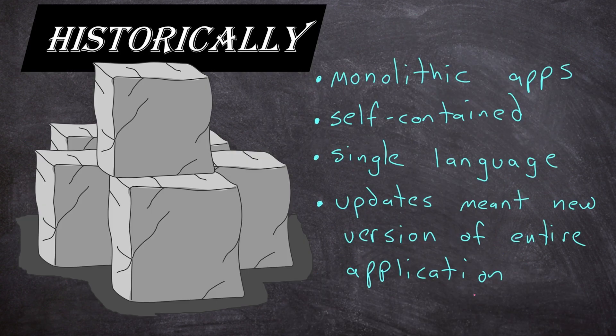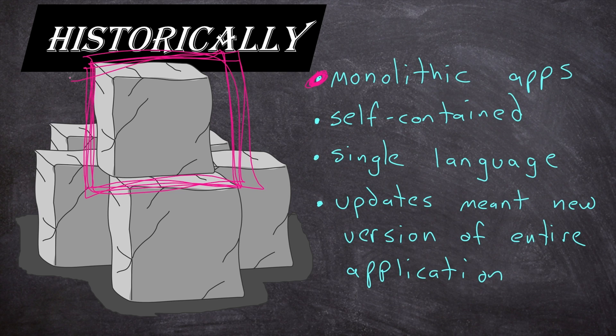Historically, a lot of applications are what we call monolithic apps. You have one single application with lots of moving parts, but it's usually packaged together in one unit. This is the kind of thing where you download the installer and install it on your computer, or you ship out CDs with your applications on it. You don't have to usually install a database on your workstation in order to use the program - it's usually all part of the single installed unit.